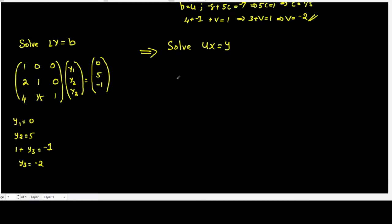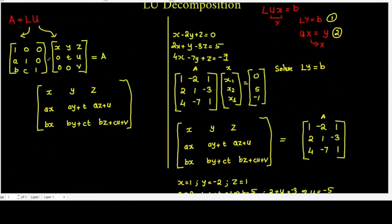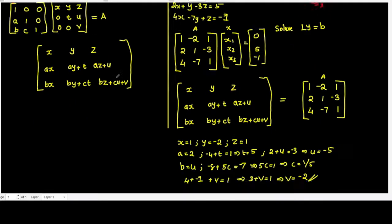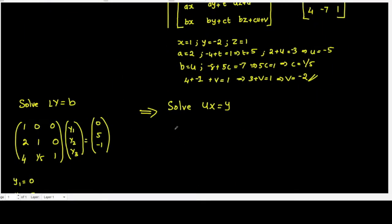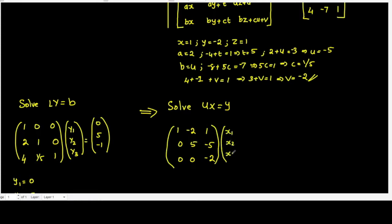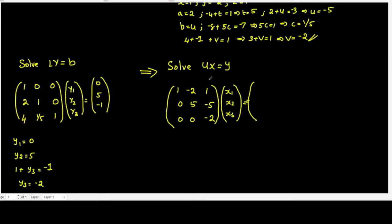We are solving Ux equal to y. U is an upper triangular matrix, written as: 1, minus 2, 1; 0, 5, minus 5; 0, 0, minus 2. The unknown vector is x1, x2, x3, equal to y, which is y1, y2, y3 — that is 0, 5, minus 2. Here you need to solve starting from the bottom row.